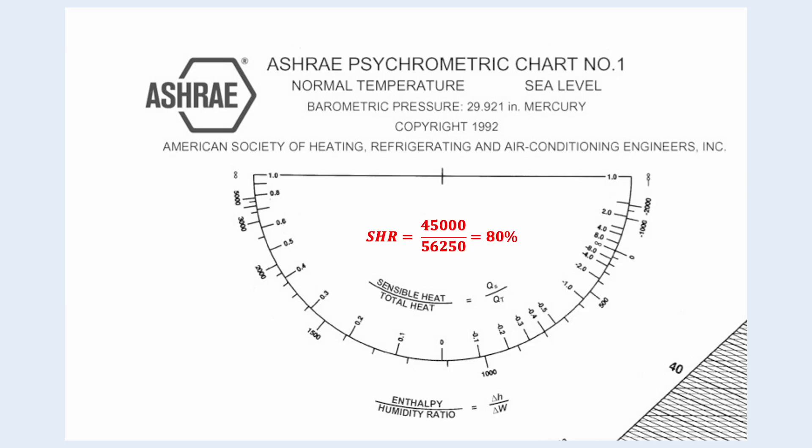By dividing the sensible cooling load by the total cooling load, we get 80% sensible heat ratio. So, we draw a line at 80%.